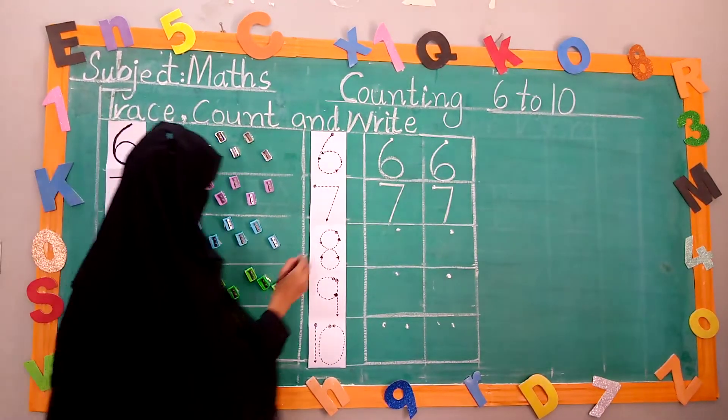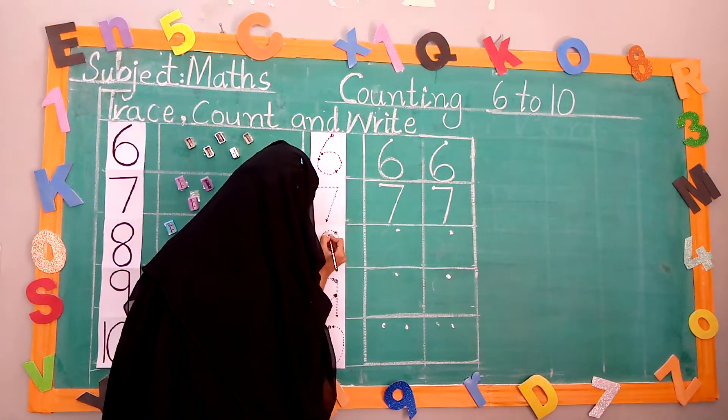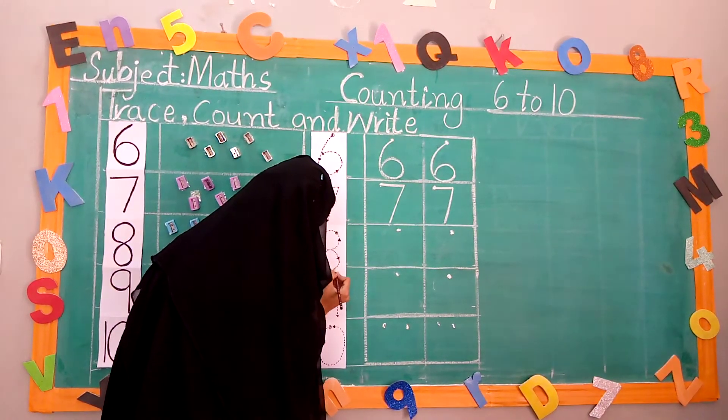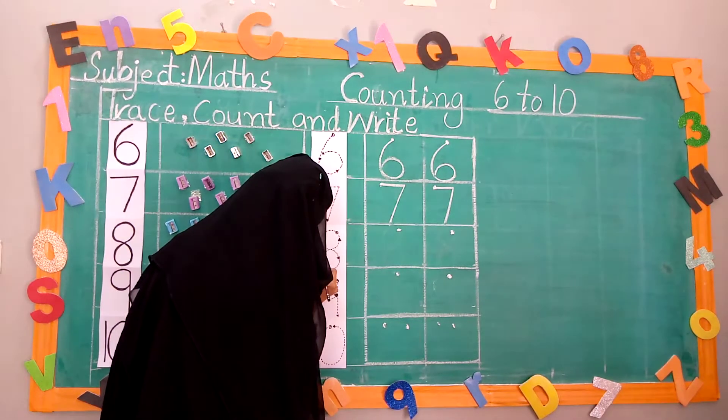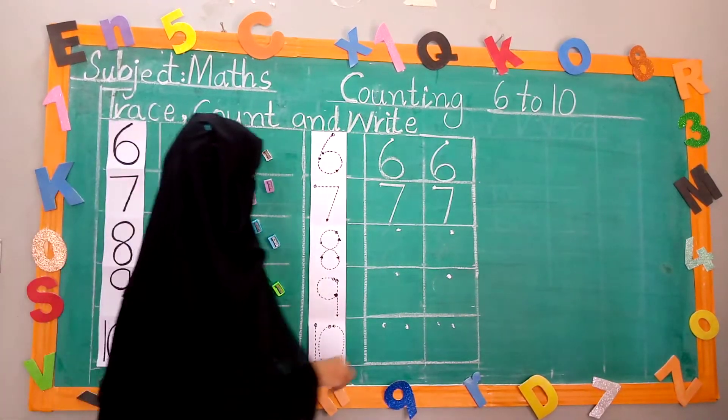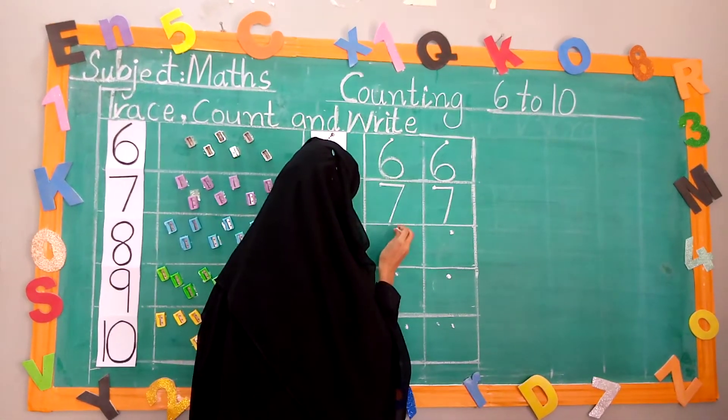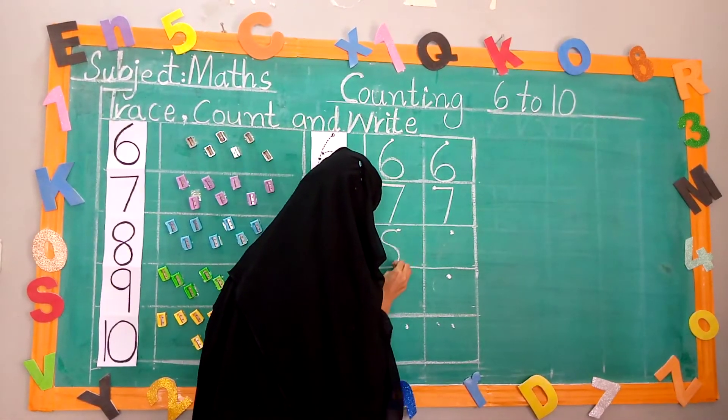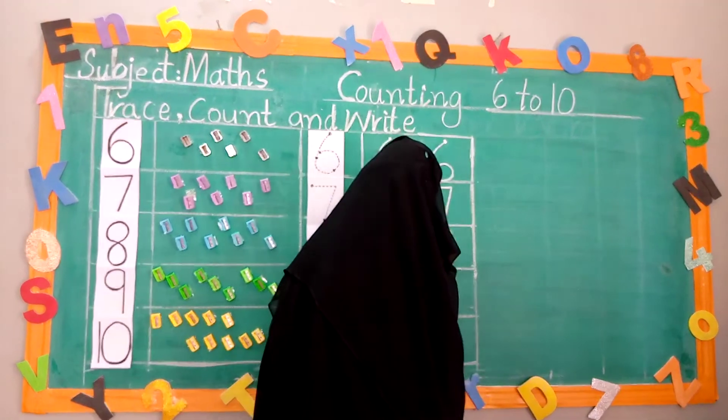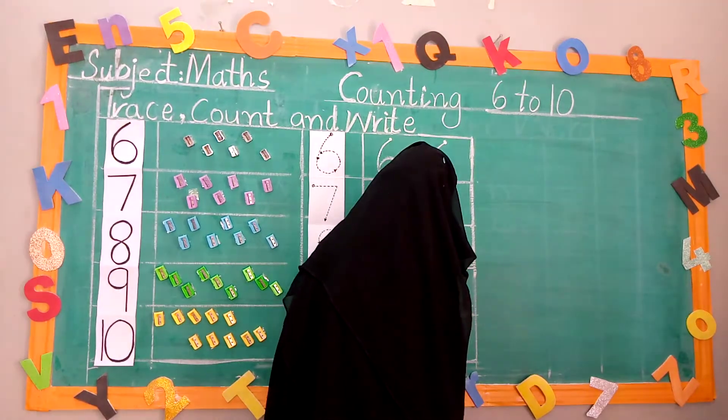Now, trace 8. 8 is sleeping snake. Now, we write 8. Again, we write 8. Touch the down line.